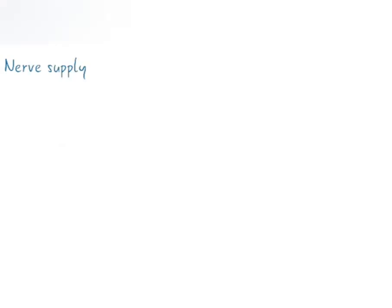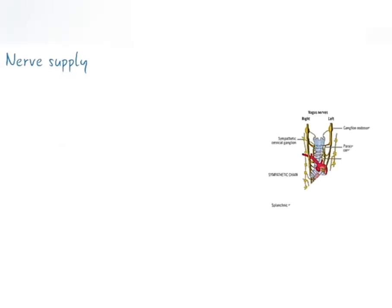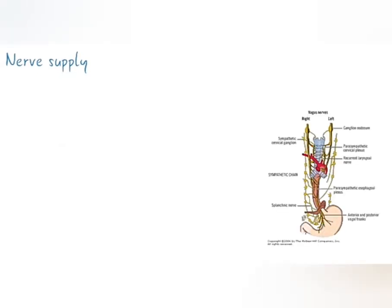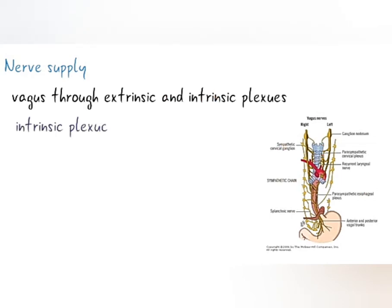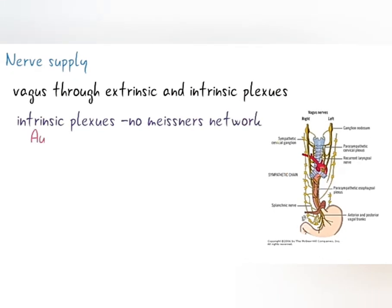Next we'll see the nerve supply. Parasympathetic nerve supply is by the vagus nerve through extrinsic and intrinsic plexuses. The intrinsic plexus has no submucosal network. The myenteric plexus is present only in the lower part of the esophagus.